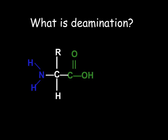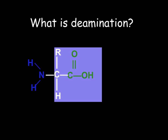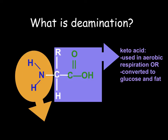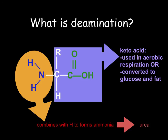What is deamination? This is the typical structure of an amino acid — the blue part is the amino group and the green part is the carboxylic group. During deamination, the amino group is removed, forming a keto acid. The keto acid is used in aerobic respiration or it can be converted to glucose and fat. The amino group combines with hydrogen to form ammonia. The ammonia combines with carbon dioxide to form urea, which moves to the kidneys and is excreted in urine.